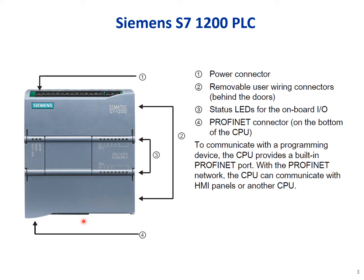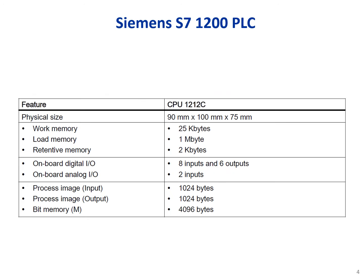The Profinet port is used to communicate with a computer, HMI, or other PLCs via the Profinet network. The CPU can communicate with an HMI panel or another CPU. The S7-1200 features include physical size, work memory, load memory, retentive memory, onboard digital I/O, onboard analog I/O, process image input, process image output, and bit memory.